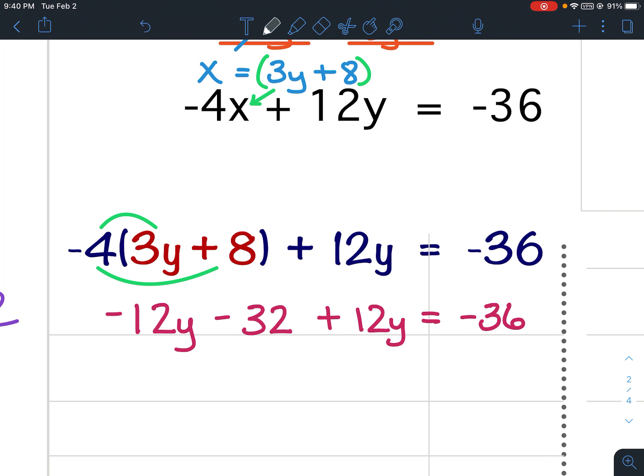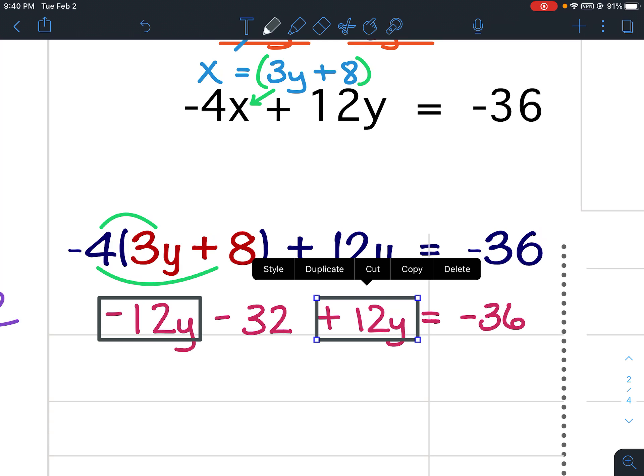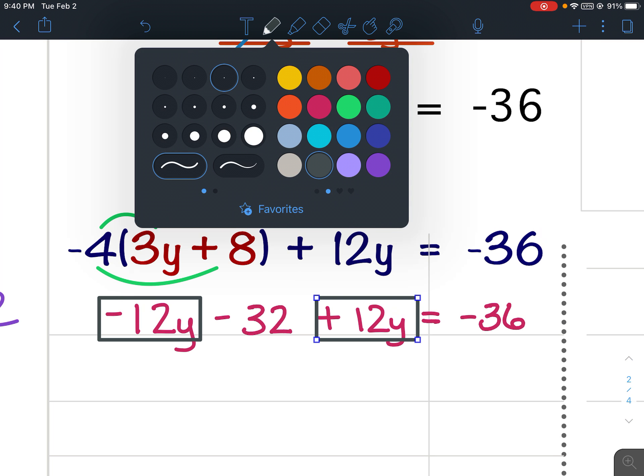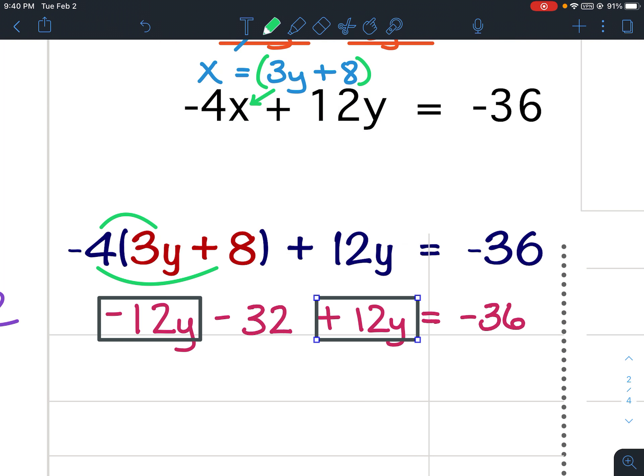And now we combine like terms. So I've got negative 12y and positive 12y. What happens with those? They will cancel. They are opposites, so they will cancel.